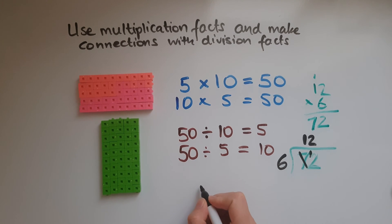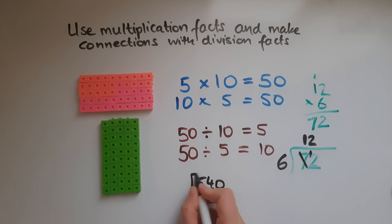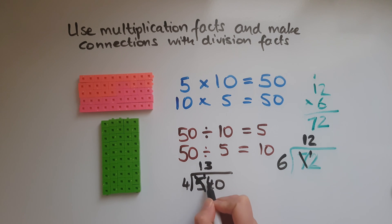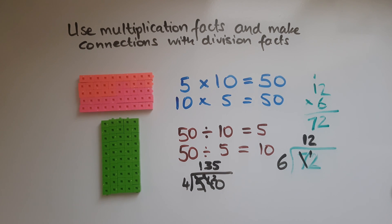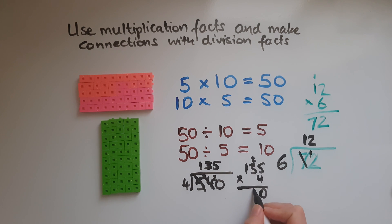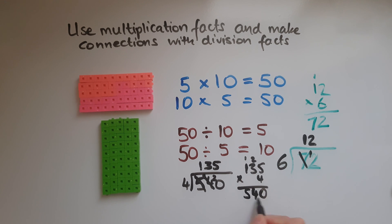Or if I start with division: 540 divided by 4. How many 4s into 5? That's 1 with 1 left. How many 4s into 14? That's 3, because 3 × 4 = 12. Then how many 4s into 20? That's 5. So 135 is the answer. To check, I do the opposite — 135 times 4: 4 lots of 5 is 20, write 0 carry 2; 4 times 3 is 12 plus 2 is 14, write 4 carry 1; 4 times 1 is 4 plus 1 is 5. So 540, which matches the number we started with. That proves the calculation is right.